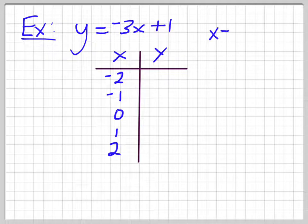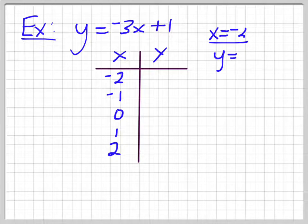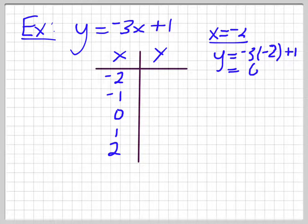So x is equal to negative 2. So if I do that, I get y is equal to negative 3 times negative 2 plus 1. So negative 2 times negative 3 is 6 plus 1 is 7. So that's my first value.